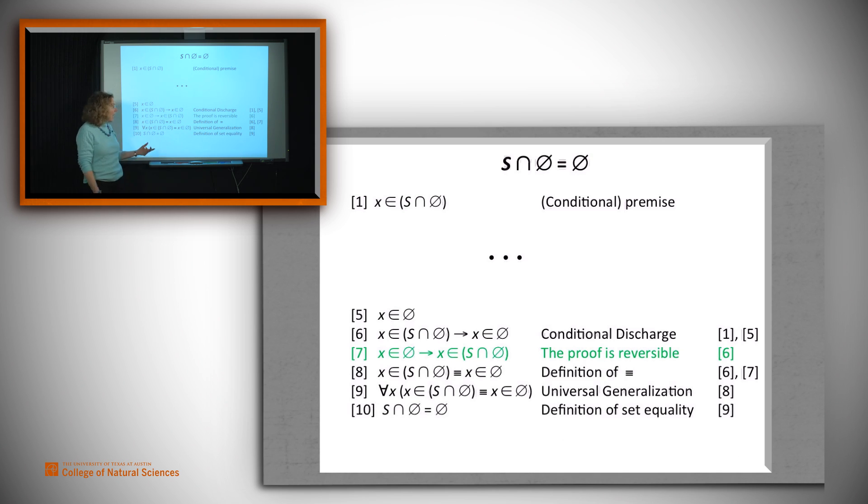And then we can say, yeah, and given the definition of set equality, namely that the two sets contain the same elements, we can assert our desired conclusion that S intersect the empty set is equal to the empty set. So we've got most of our proof except for the guts of it. How do we do this part here and show that being in one of the sets implies being in the other? So let's talk about a technique for doing that.